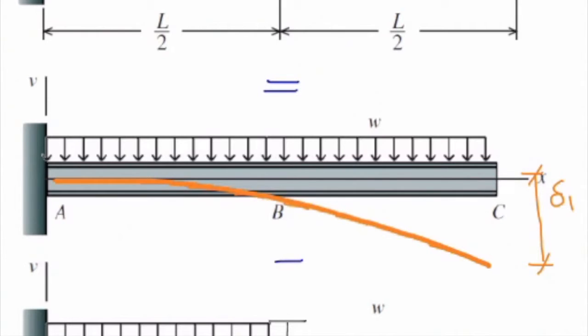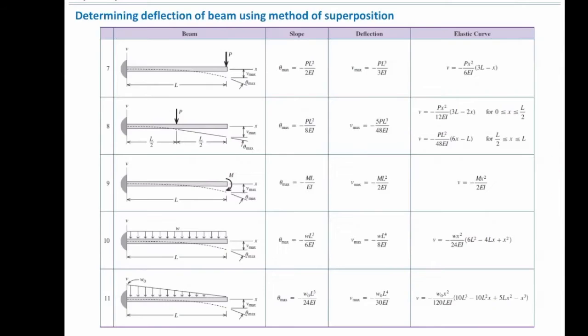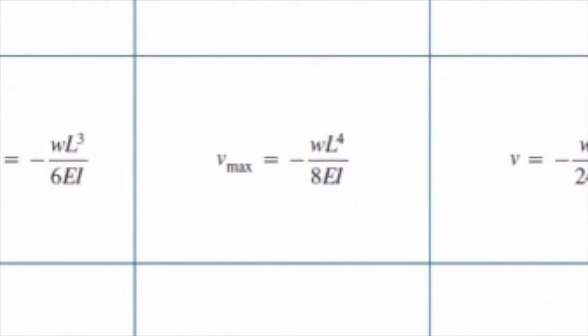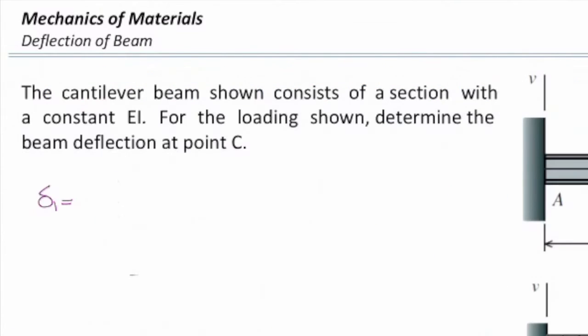Delta 1, how we can determine that? We need to get back to the table. We use figure number 10, and the deflection at the very right end is WL to the 4th over 8EI.